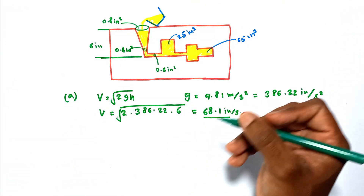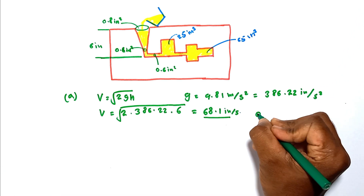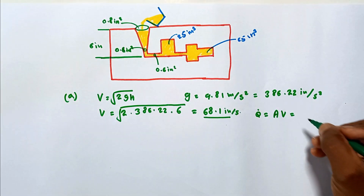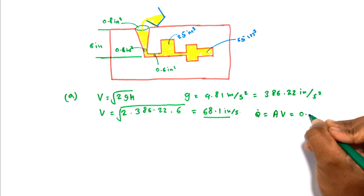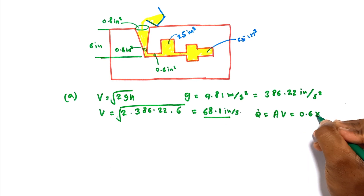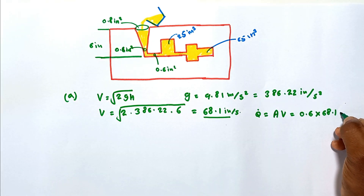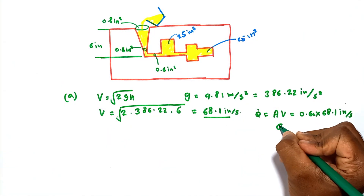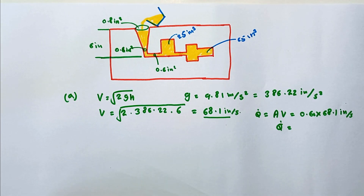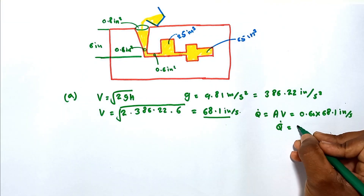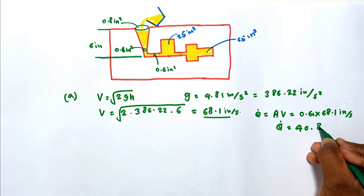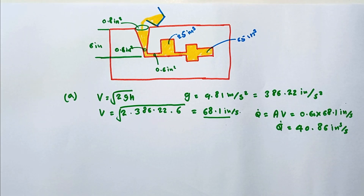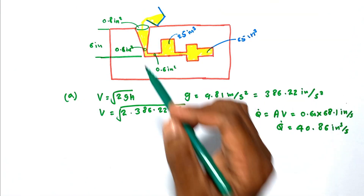We can now calculate the volume flow rate. The theoretical flow rate q_dot_t equals the cross-sectional area multiplied by the velocity. Substituting the values: the cross-sectional area is 0.6 square inches and the flow velocity is 68.1 inches per second, giving q_dot_t equal to 40.86 cubic inches per second. This is the flow rate at the bottom of the sprue.